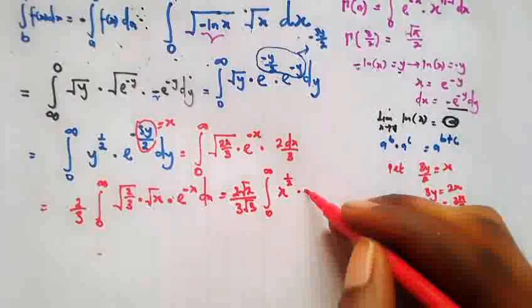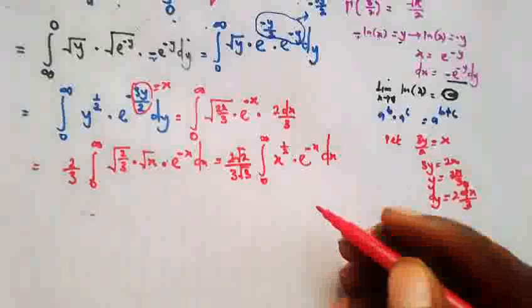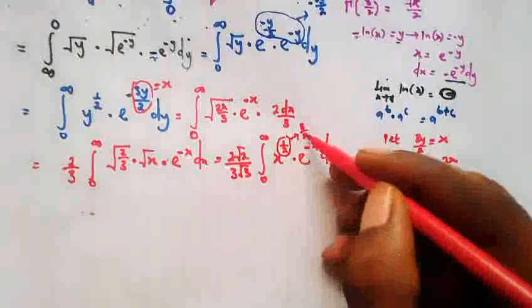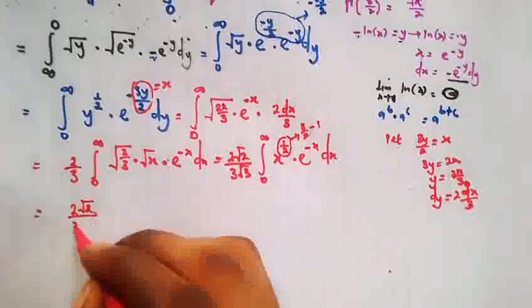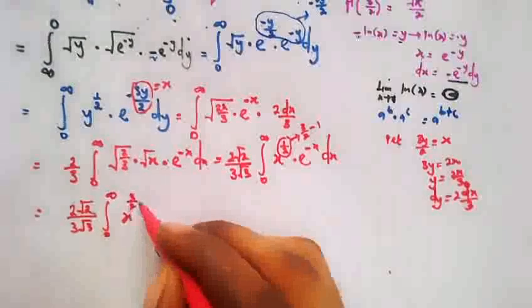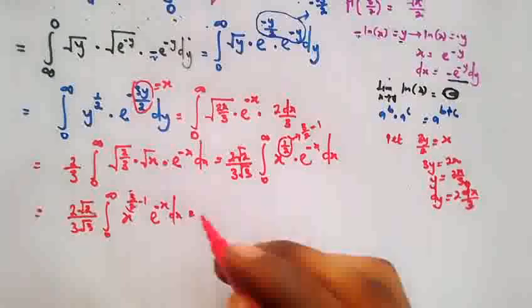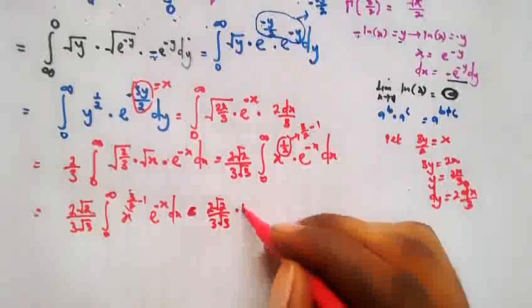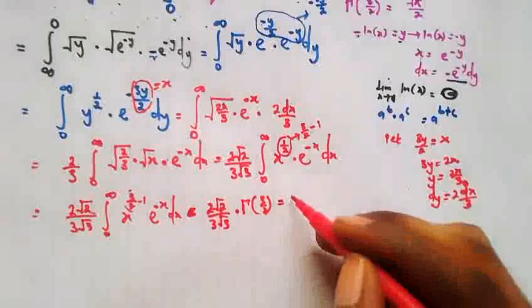We rewrite the exponent 1/2 as 3/2 minus 1, so the integral becomes the integral from 0 to infinity of x raised by 3/2 minus 1 times e raised by negative x, dx. We recognize this as the gamma function, giving us gamma of 3/2. Substituting the known value, gamma of 3/2 equals square root of pi over 2, we have 2 square root of 2 over 3 square root of 3, times square root of pi over 2.